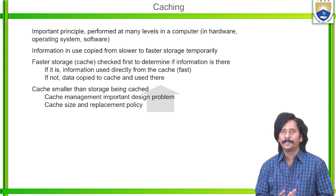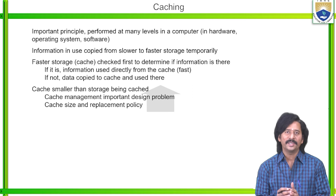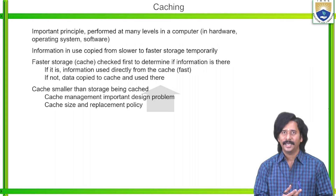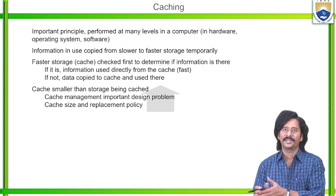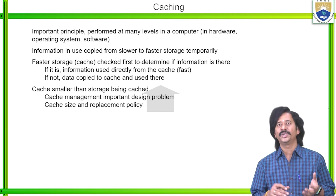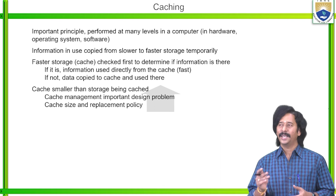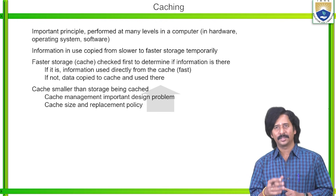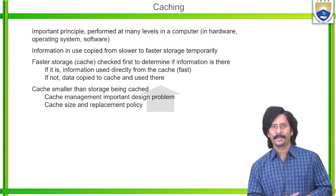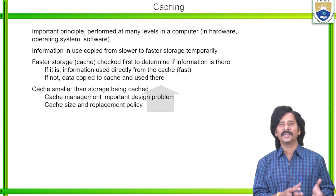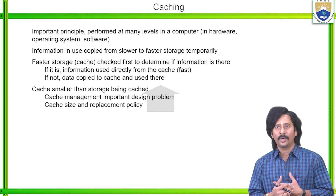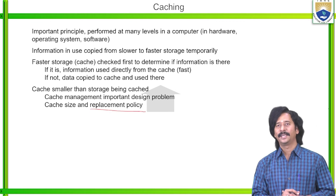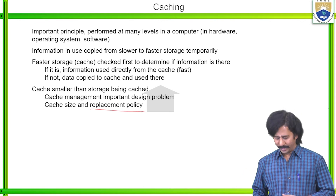Caching is an important principle performed at many levels in a computer. Information is copied from slower to faster storage temporarily. The cache checks first to determine if the information is there — if it is, it is used directly from cache memory; if not, it is copied to cache and then used. Cache memory is always smaller than the storage being cached. Cache management — including cache size and replacement policy — is an important design problem, which we will discuss later in page replacement algorithms.